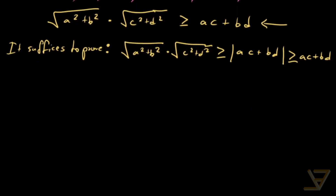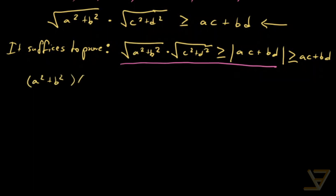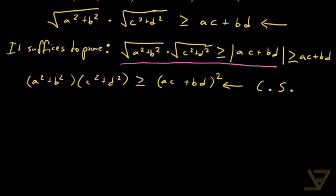Now we can square both sides and work backwards once more, since both sides are non-negative. We get (a² + b²)(c² + d²) ≥ (ac + bd)². For those familiar with multivariable inequalities, this is equivalent to a lower instance of the Cauchy-Schwarz inequality — but we're not going to assume that; we'll prove it directly.